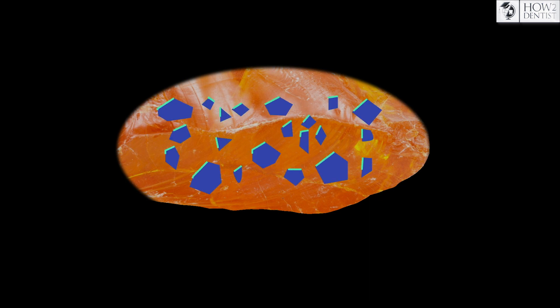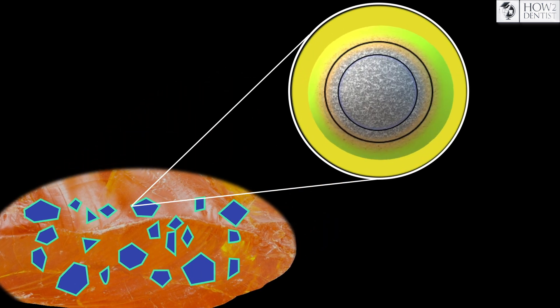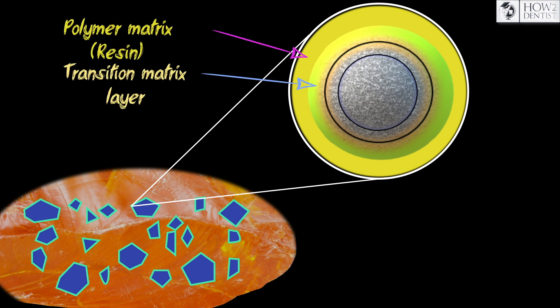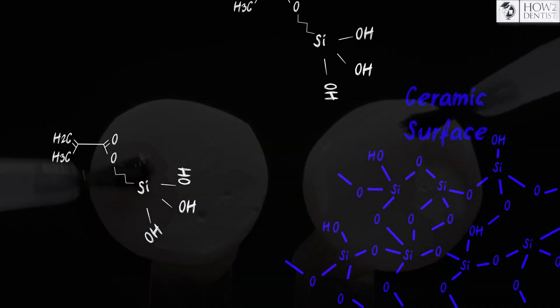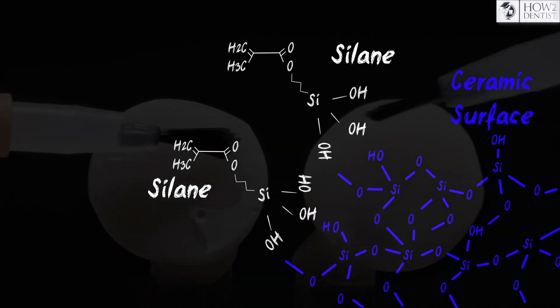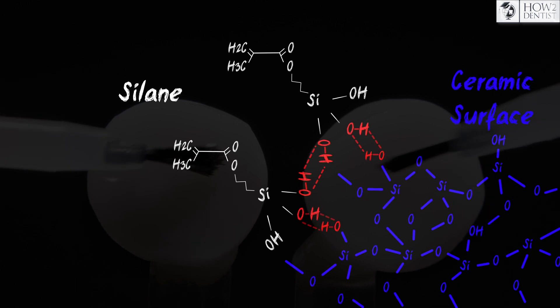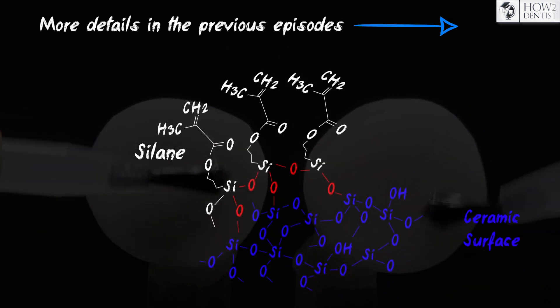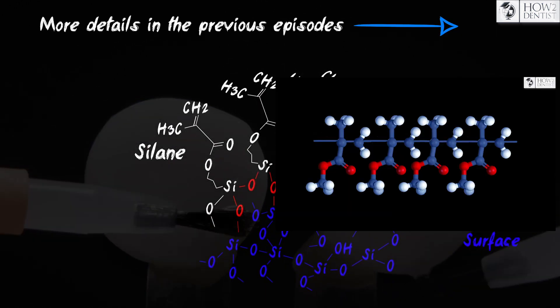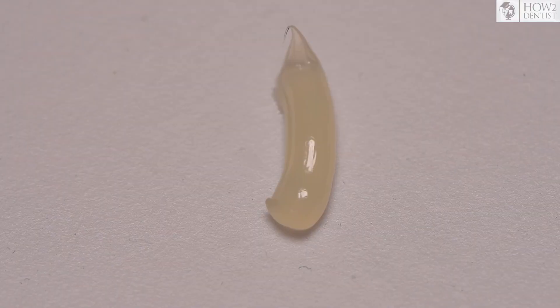The interfacial layer is the zone of transition of the matrix into the filler, and includes low molecular weight inclusions of the resin on one side and silane-treated filler on the other. Silane enhances the interfacial layer and creates a stable and waterproof adhesive bond between the filler and the matrix. For details on silane and the polymerization process, see previous video episodes.